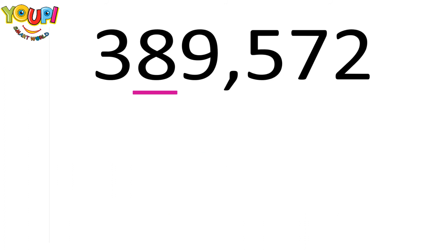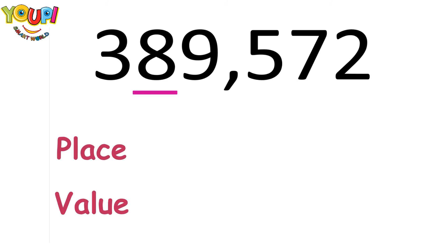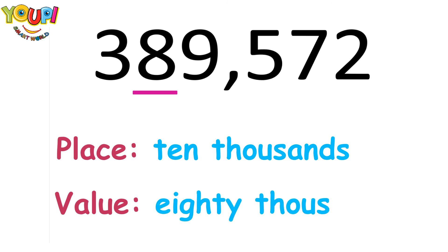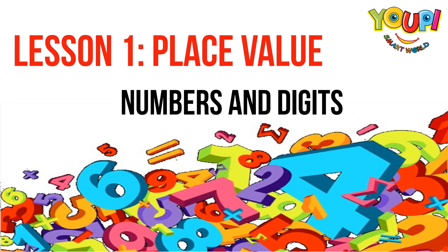Let's try another one. Look at this number. I want you to find the place and the value of the digit 8. Where is digit 8 placed in the place value chart? That's right, it's in the 10,000 place. What is its value? You're right — it's 8 times 10,000, which is 80,000.